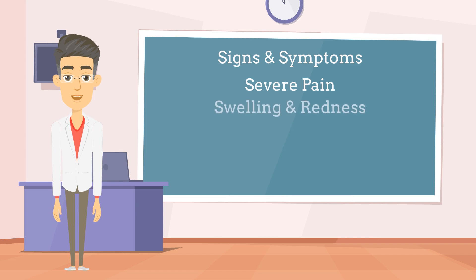Swelling and redness: the infected area typically exhibits rapid swelling, redness, and inflammation. The skin may appear shiny and stretched, with a purplish or dusky discoloration. As the infection progresses, the skin may become pale or discolored due to tissue necrosis. Skin changes: the skin overlying the affected area may develop a blistering or bullous rash, forming fluid-filled blisters that can rapidly evolve into areas of skin breakdown or ulceration. You may also see color changes as the skin becomes red or purple.